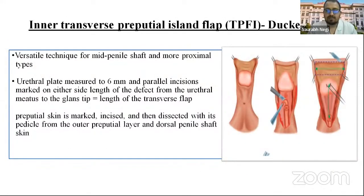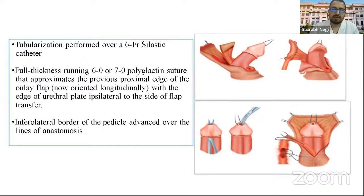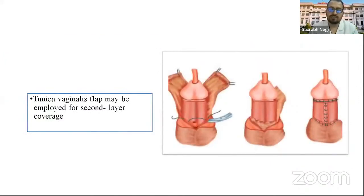The inner transverse prepucial island flap (Duckett tube) is a versatile technique for mid-penile or more proximal types. The urethral plate is measured to 6 mm and parallel incisions are marked on either side of the defect from the urethral meatus to the glans tip, equal to the length of the transverse flap. The prepucial skin is marked, incised, and dissected with its pedicle from the outer prepucial and dorsal penile shaft. Tubularization is performed over a 6 French catheter with full-thickness running 6-0 or 7-0 polyglactin sutures. An infiltratory border of the pedicle is advanced over the line of anastomosis, and the tunica vaginalis flap may be employed as a second-layer coverage.